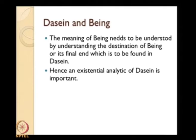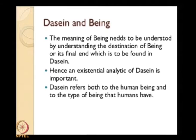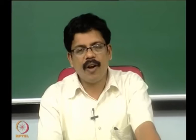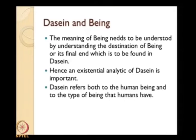The existential analytic of Dasein becomes a very important concern for Heidegger. Here Dasein refers both to human being and to the type of being that humans have. The concept of Dasein is very complex — Heidegger uses expressions like 'my Dasein,' or the possibility that Dasein is lost and gained. Problems in translation from German to English also create some confusion with intent and meaning.